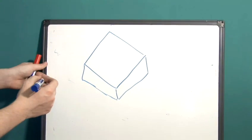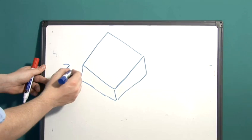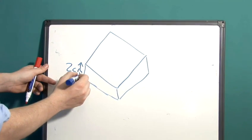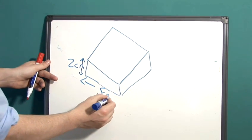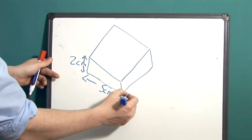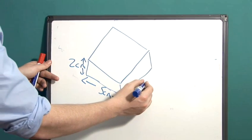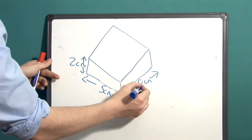So let's add in some dimensions for our example. Let's say that here it was 2 centimetres and here it was 5 centimetres and finally this dimension here was 8 centimetres. Let's make that a bit clearer.